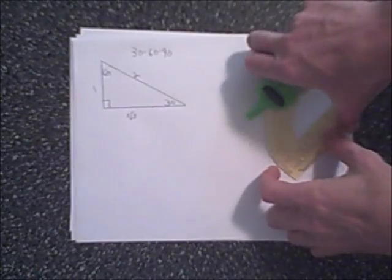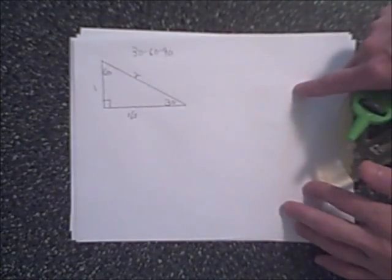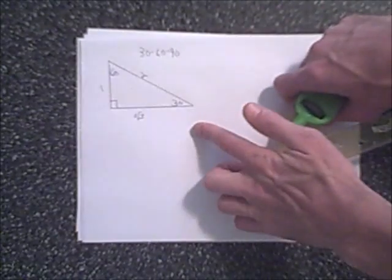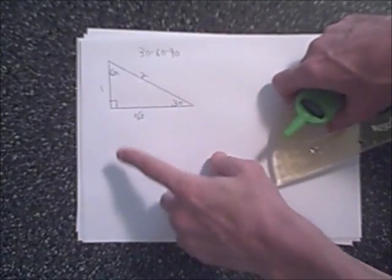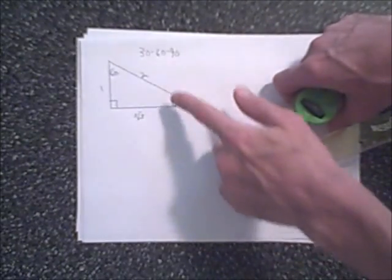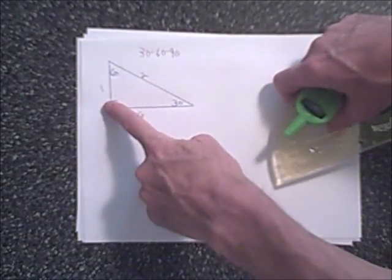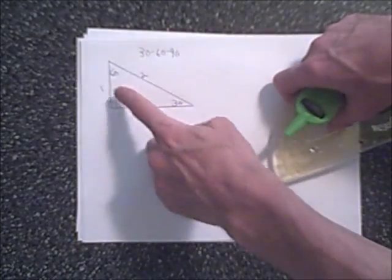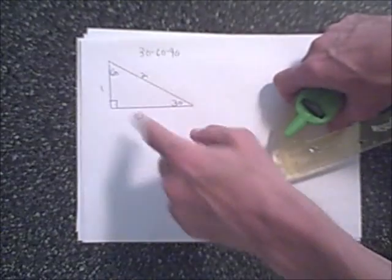In this video, we're going to construct a 30-60-90 right triangle. If you look at the drawing right here, let's take note of some of the properties. Obviously, a right angle. If you notice, the hypotenuse is two times the length of the small side. Of course, it's 30, 60, and 90 degrees.